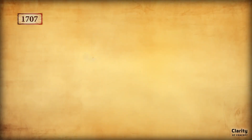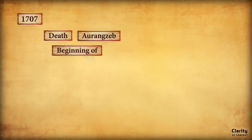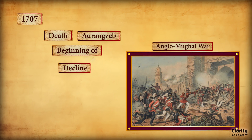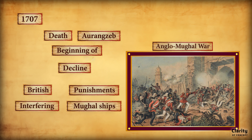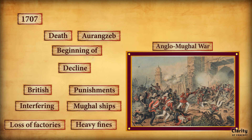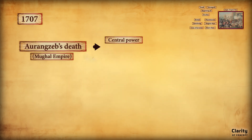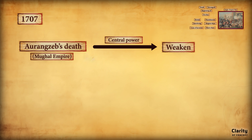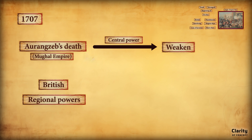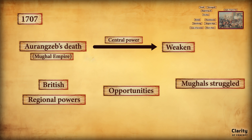In 1707, the death of Emperor Aurangzeb marked the beginning of the decline of the Mughal Empire. Challenging Mughal authority before this point had been extremely difficult, as clearly seen during the Anglo-Mughal Wars, where the British faced severe punishments for interfering with Mughal ships. However, after Aurangzeb's death, the central power of the Mughal Empire began to weaken, and over the following decades the British and other regional powers found more opportunities to expand their influence.